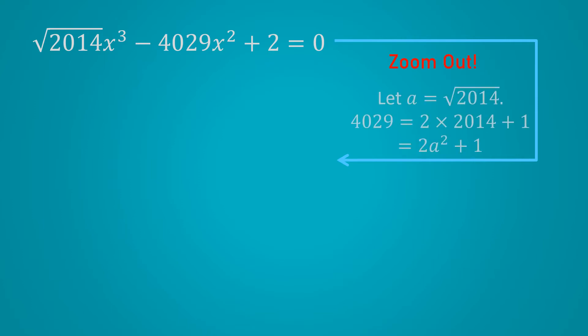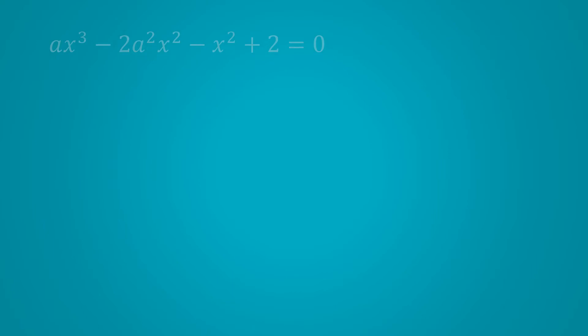With that in mind, let's look at the equation again. 2014 and 4029 probably have no other significance. So instead of getting bogged down by these strange values, let's zoom out. I'll let a be square root 2014. And therefore, 4029 would just be 2a squared plus 1. And then our equation can be rewritten in terms of a. I'll quickly expand the middle term. And let's look at what we have here.